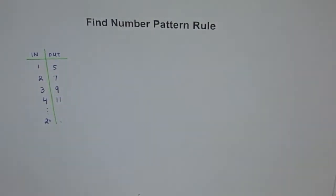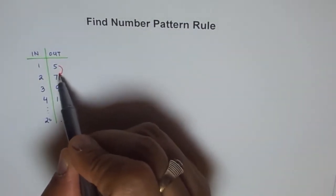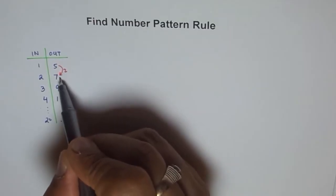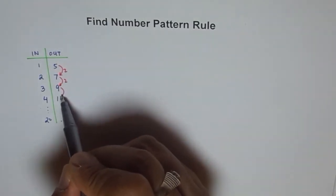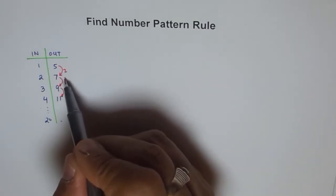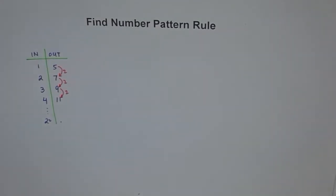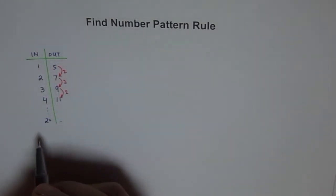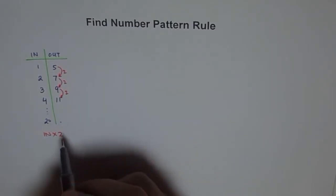We see a pattern here. As you go from one output to the next: 7 minus 5 is 2, and 9 minus 7 is 2. So the pattern is: start at 5, increase by 2 each time. Since we're adding 2 each time, that means times 2 is part of our pattern rule. So we try input times 2.